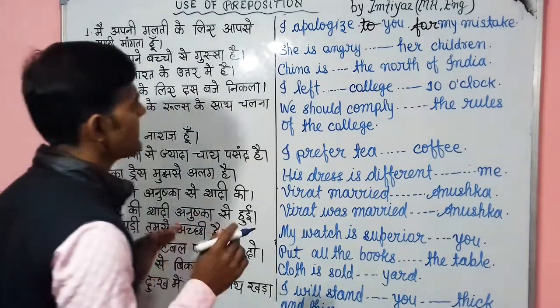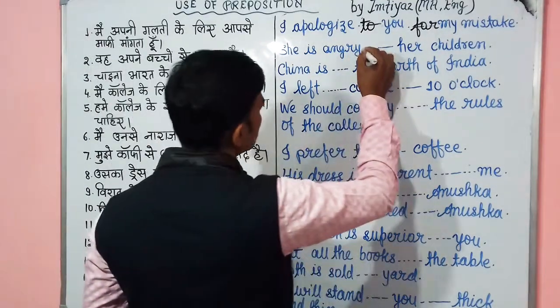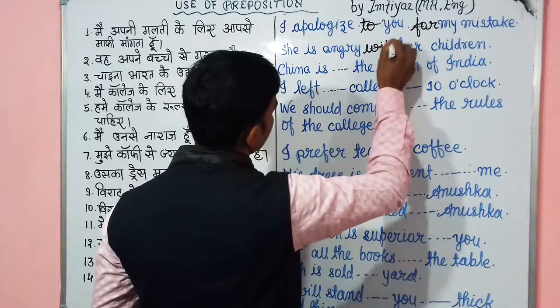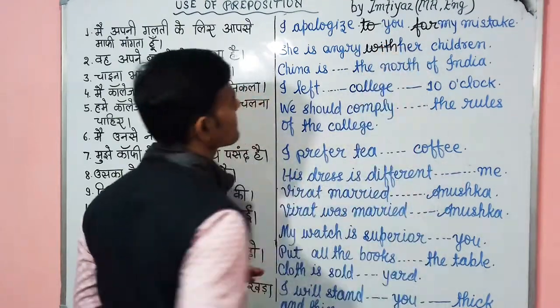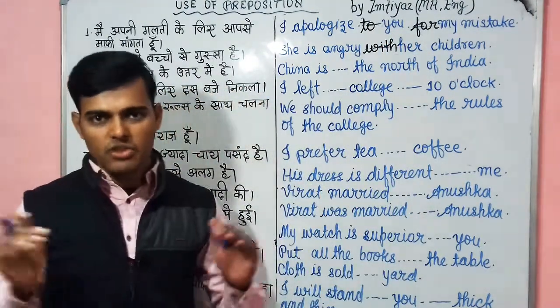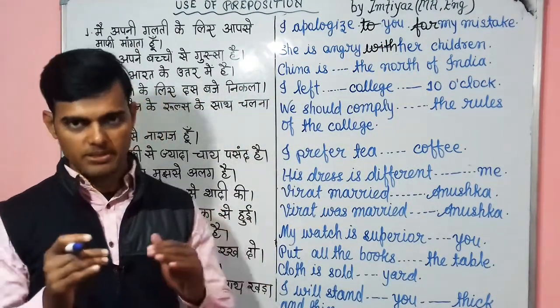वह अपने बच्चों से गुस्सा है — She is angry with her children. हमेशा 'angry with' होता है — angry with some person.